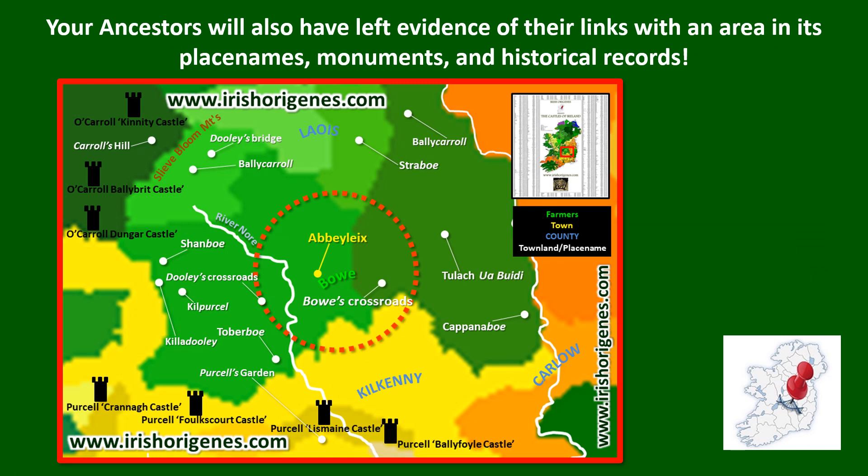So what does all this mean? You now have an area that you know your paternal ancestral paper trail will lead back to — this is ground zero for your paternal ancestors. The great thing is that in Ireland there's a lot of information available in place names, monuments, and historical records. I've shown here some of the place names and castles I've identified in this area that all reflect the surnames that appear among my YDNA matches.